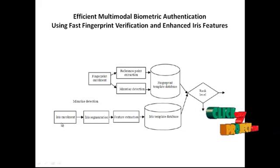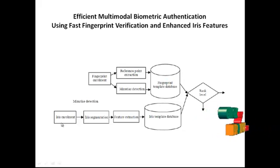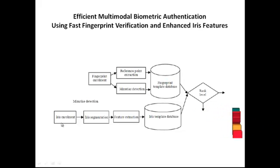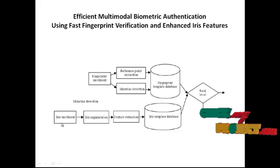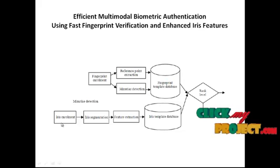Thirdly, binarization is applied to transform the 8-bit grey image to a 1-bit image with 0 values for ridges and 1 value for furrows. Fourthly, the direction information of the minutiae is considered for authentication. The orientation information is obtained by converting ridges and furrows to flow curves pointing the direction.